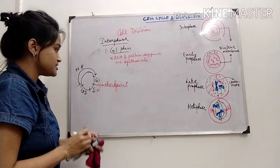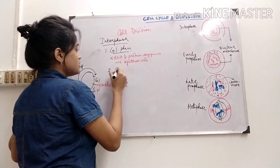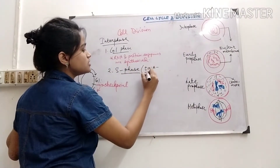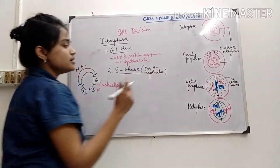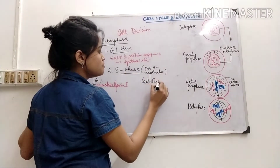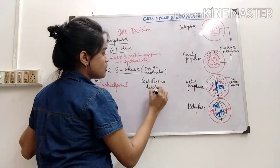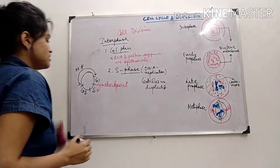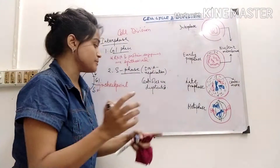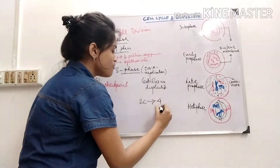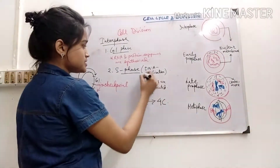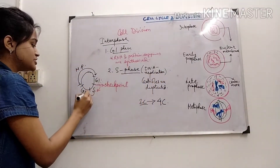In the S phase — the synthetic phase — DNA replication occurs. The DNA amount doubles from 2C to 4C. At the same time, centrioles are also duplicated in this phase. After completing DNA replication, the cell moves into the G2 phase.